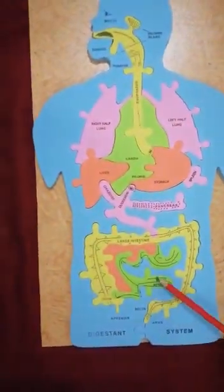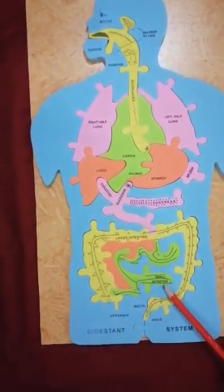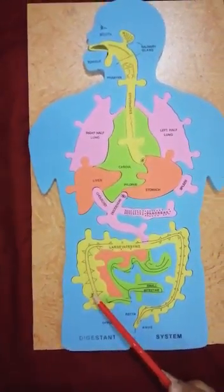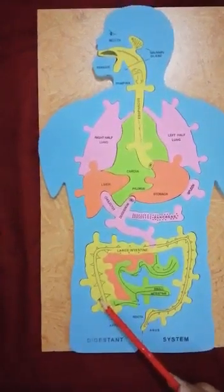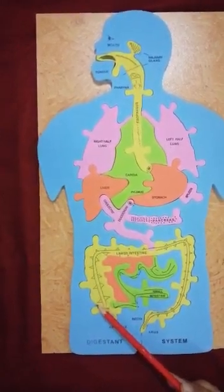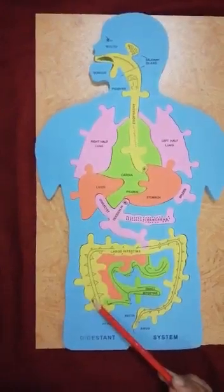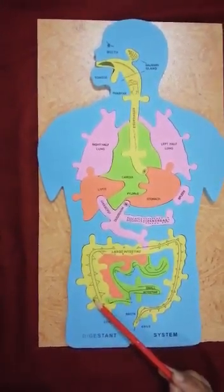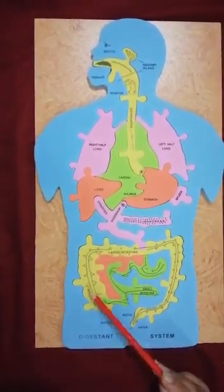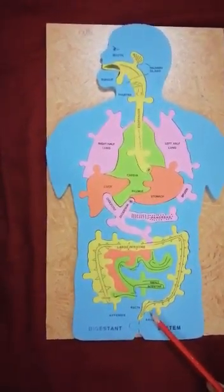From the small intestine, the undigested food enters into the large intestine, from where water and mineral salts are absorbed into the blood. Food also contains fibres and cellulose which cannot be digested. So fibres and any remaining undigested material are passed on to the rectum, where they are stored as faeces.